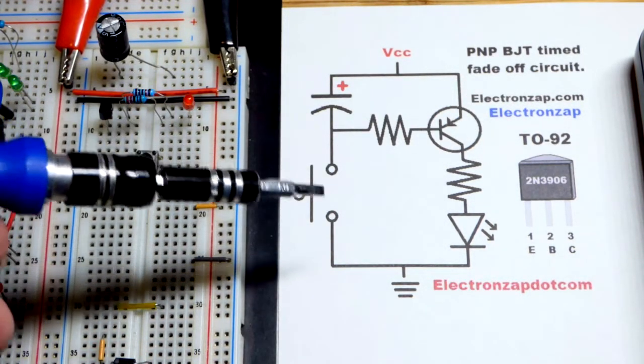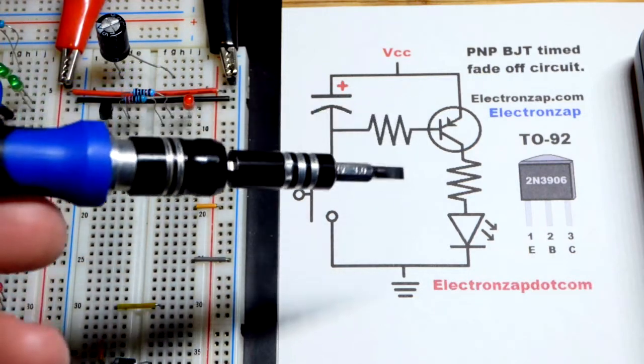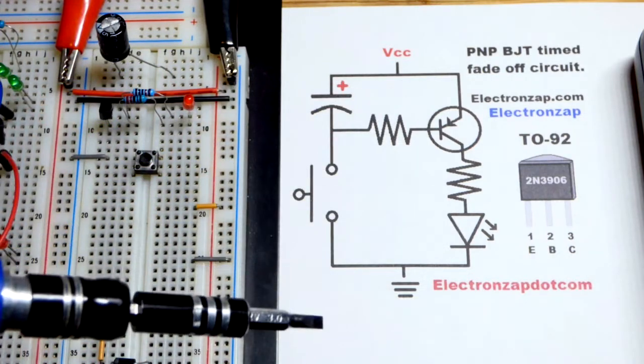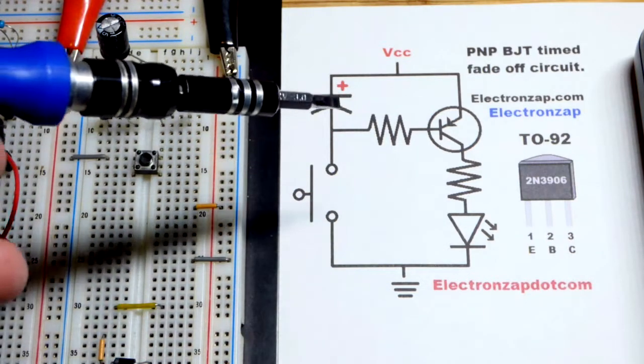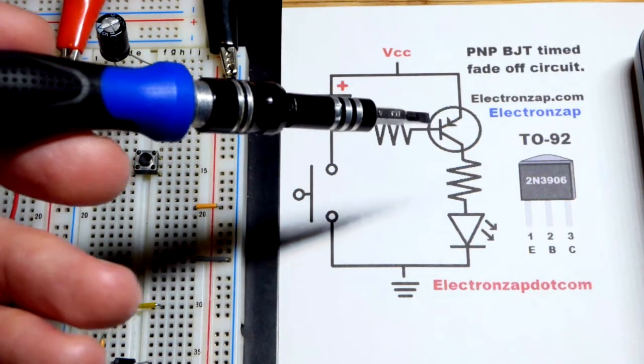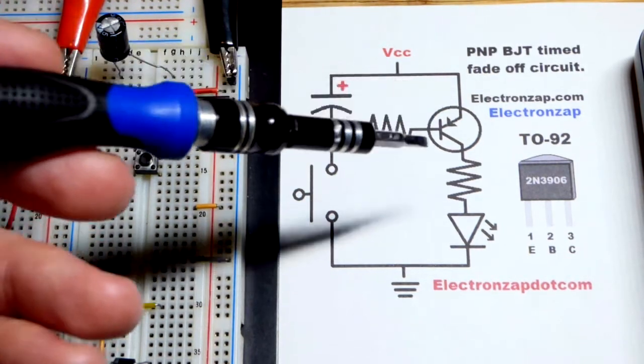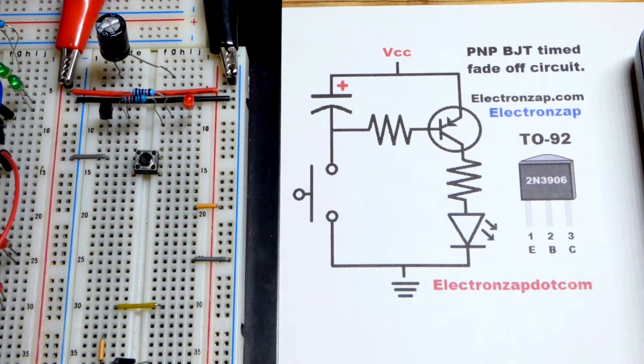where we also did the timed fade-off circuit. So when we press the button, the transistor will turn on, the LED will turn on instantly. When we release it, the capacitor is going to keep the transistor on for a period of time, and then it's going to fade off, and so we'll see that coming up.